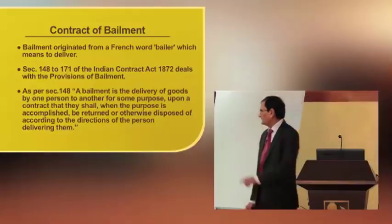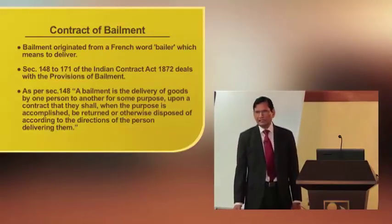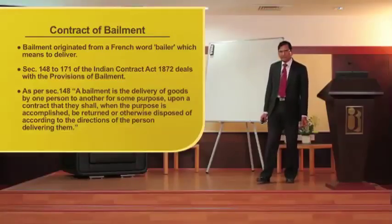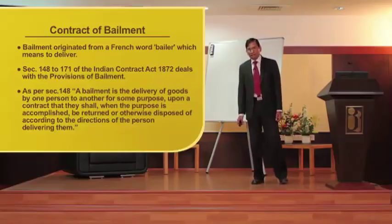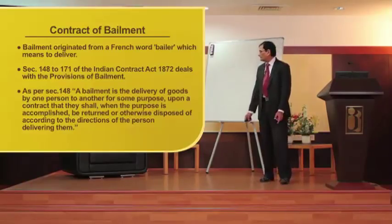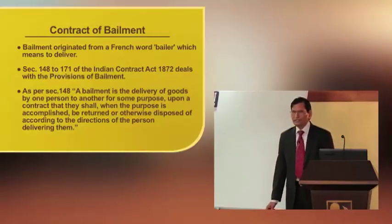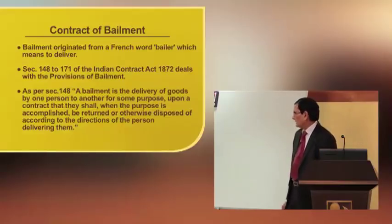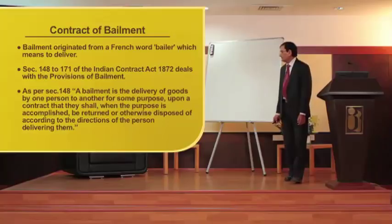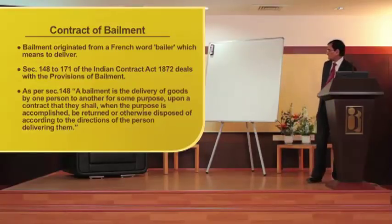By the definition it is very clear: bailment is the delivery of goods by one party to the other for some purpose upon a contract that they shall, when the purpose is accomplished, be returned or otherwise disposed of according to the directions of the persons delivering them. The person who delivers the goods is called the bailor, and the person to whom goods are delivered is known as the bailee.